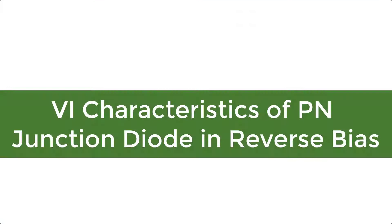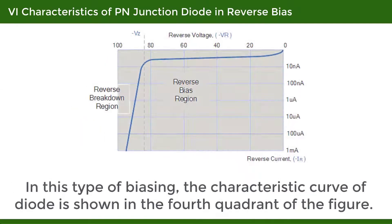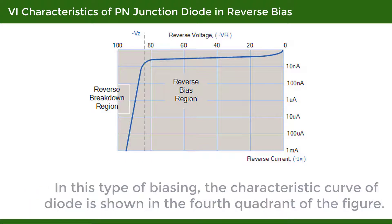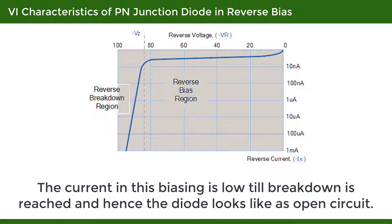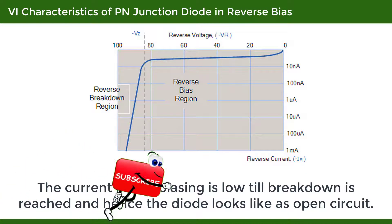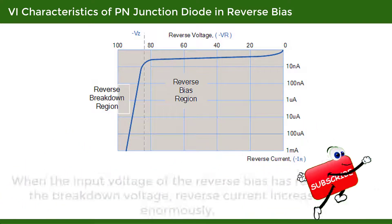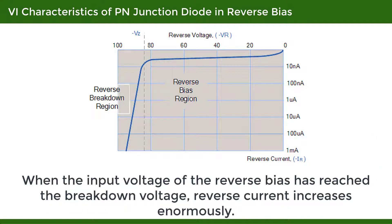VI Characteristics of PN Junction Diode in Reverse Bias: In this type of biasing, the characteristic curve of the diode is shown in the fourth quadrant of the figure. The current in this biasing is low until breakdown is reached, and hence the diode looks like an open circuit. When the input voltage of the reverse bias reaches the breakdown voltage, the reverse current increases enormously.